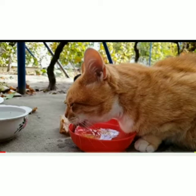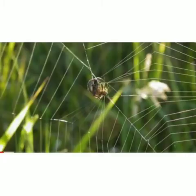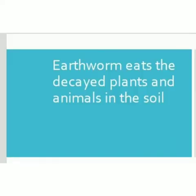Next, let us learn about some more animals' eating habits like spider, earthworm, leech, mosquito, butterfly, and elephant. The spider makes webs to trap insects, or it catches insects bigger than itself for its food. Haven't you seen an earthworm? Earthworm eats the decayed plants and animals in the soil.